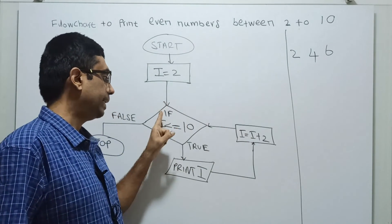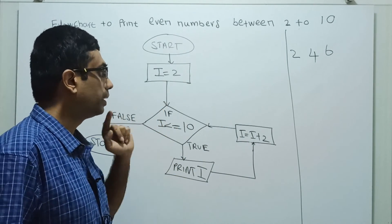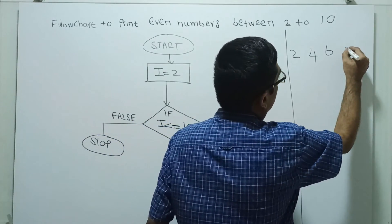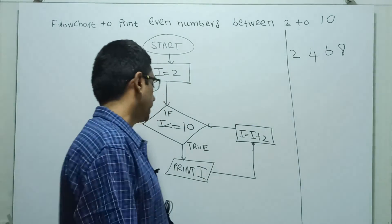Then i equal to i plus 2, 8. 8 less than or equal to 10. Print i, 8 will get printed. Next...